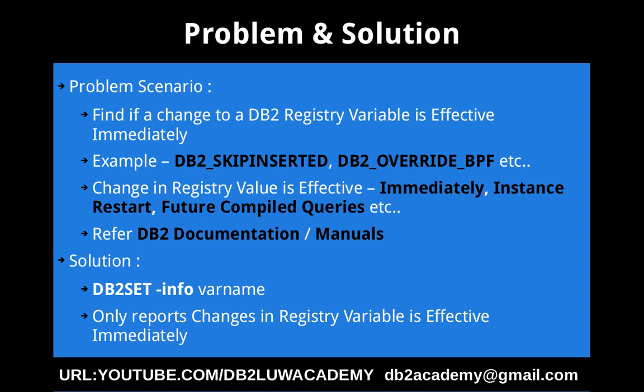This slide talks about the problem scenario and solution. The problem scenario is: we want to find if we change a value to a particular DB2 registry variable, whether that change is effective immediately or not. There are a lot of registry variables like DB2_SKIP_INSERTED, DB2_OVERRIDE_BPF, DB2_SKIP_DELETED, DB2_EVAL_UNCOMMITTED — more than 30 or 40 registry variables.